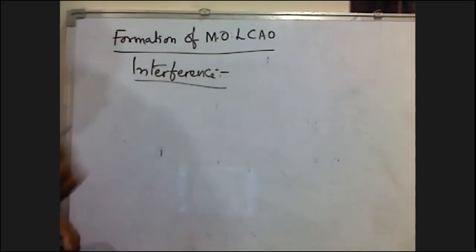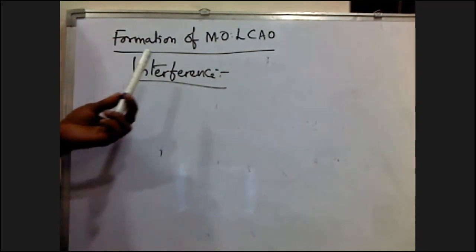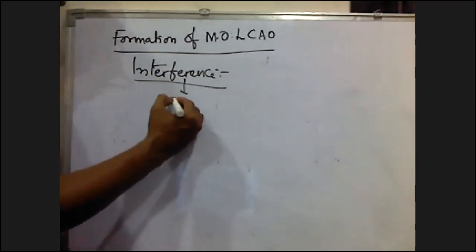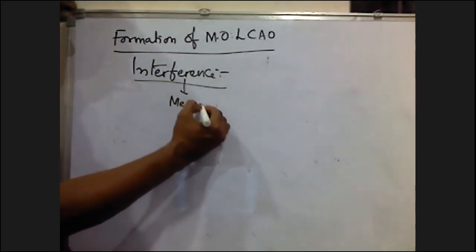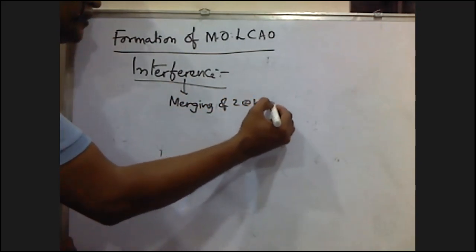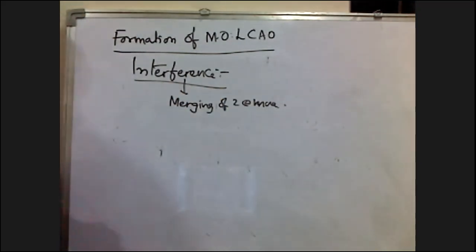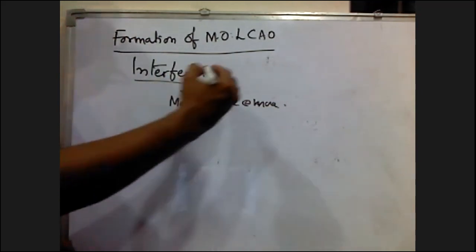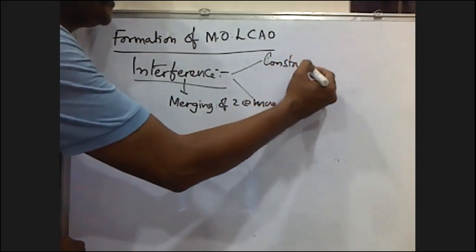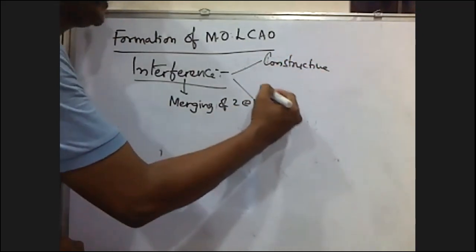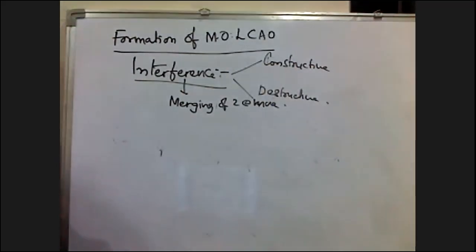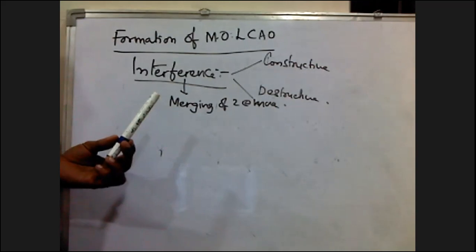The merging of two or more waves is called interference. Interference is of two types: one is constructive interference, and the second is destructive interference.